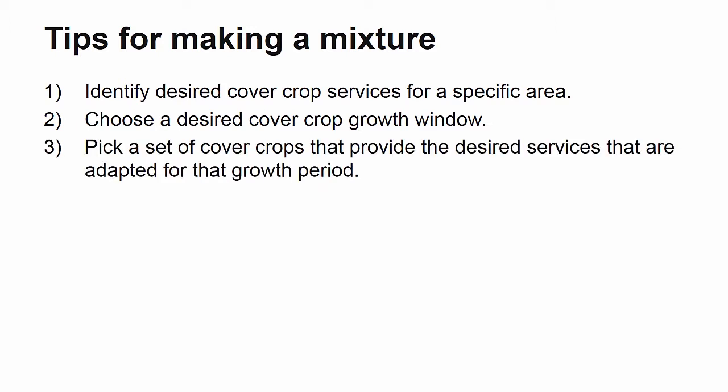Third, pick a set of cover crops that provide the desired services and fit into the adapted growth period that you identified in steps one and two. It isn't necessary to go overboard with species in a mix — it is okay to only have two species if that's what works for your farm. Typically, two to three species is a good starting point, but growers will sometimes plant up to eight to ten crops in a mix, so do what is best for you.